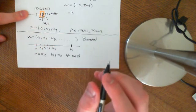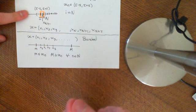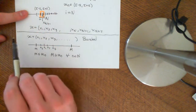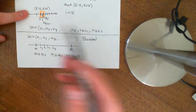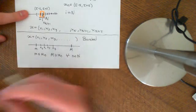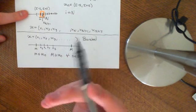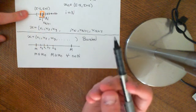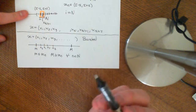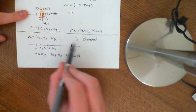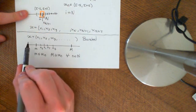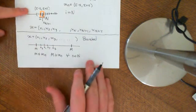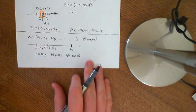Now we're going to introduce the concept of the lim sup of this sequence, because this sequence might not converge. Think of the sequence 0, 1, 0, 1 — just flipping between 0 and 1. That is a bounded sequence, but it does not converge to a limit. However, we can define something called lim sup, which in the case of this sequence being bounded, the lim sup will always exist, and that is what we're going to define next.